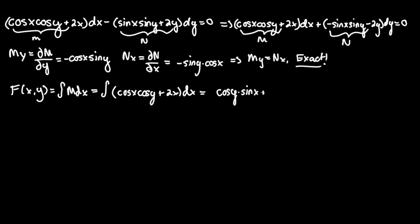Integral of 2x would be 2x squared over 2, which would eventually become x squared, plus the functional constant g of y. So let's rewrite this as sine x cosine y plus x squared plus g of y.